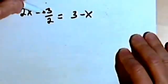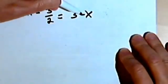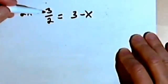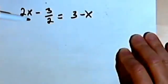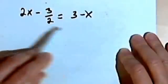So here I've got 2x minus 3 halves equals 3 minus x, and I've got this fraction here. Now a lot of people don't like fractions, but once you understand them and practice them enough, they're not that hard. So let's get some practice with this one.